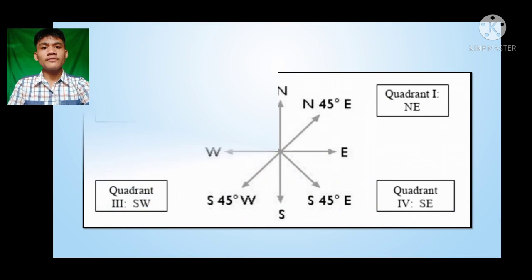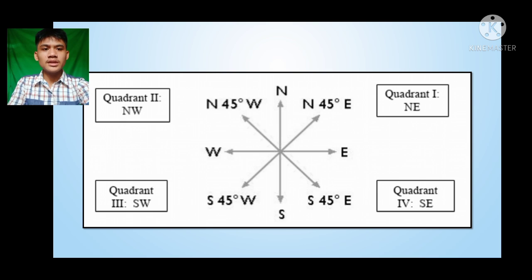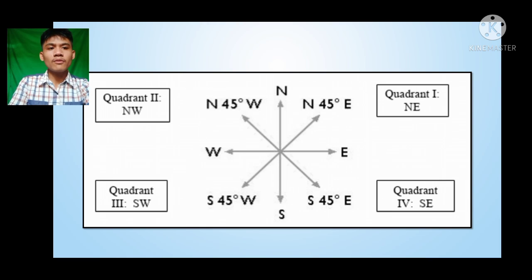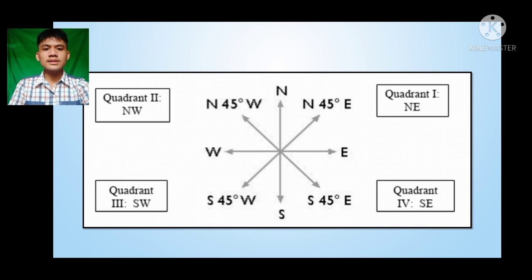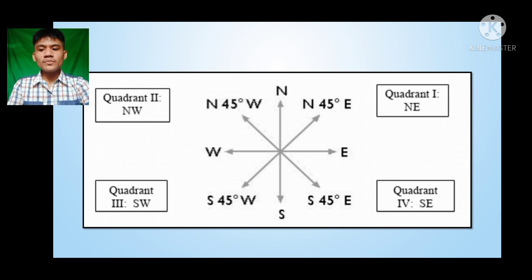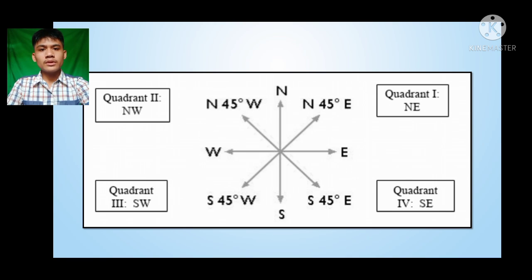To visualize the definition, here is the illustration. We have the four major directions: north, east, south, and west, and four quadrants. Quadrant one includes north and east; quadrant two has north and west; quadrant three has south and west; and quadrant four has south and east. So if the given is 45 degrees, the bearing in quadrant one is written as 45 degrees N45°E; second quadrant, N45°W; third quadrant, S45°W; and fourth quadrant, S45°E.